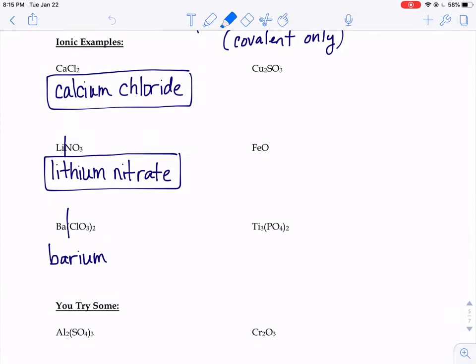Well, that two right here, this two is there for charge balancing purposes with your barium. That's why it's there. So it's basically like we have two somethings and we just have to know what the somethings are called. They're called chlorate ions.